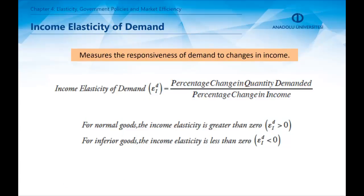Income elasticity of demand is the second type of elasticity. It is measured by percentage change in quantity demanded divided by percentage change in income. It measures the responsiveness of quantity demanded to changes in income. For normal goods it is positive, and for inferior goods it is negative.